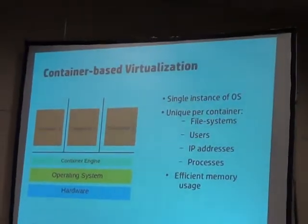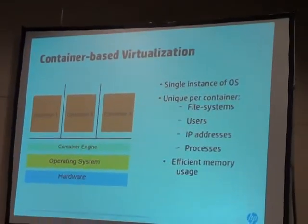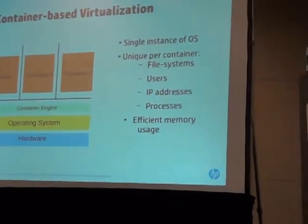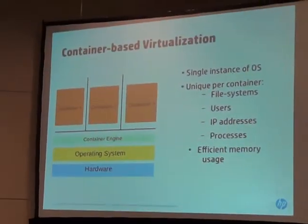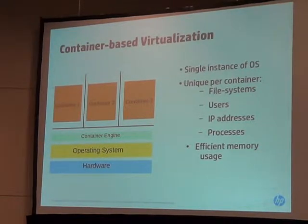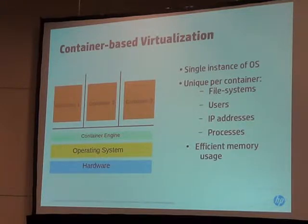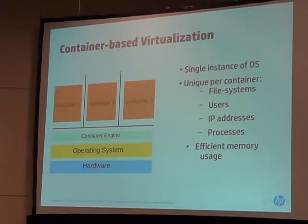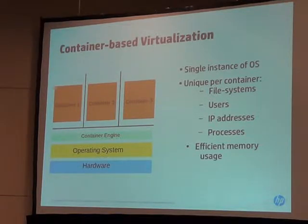To depict pictorially what I just said: here we have the hardware at the bottom, then we have the operating system and a container engine. In some cases the container engine and the operating system could be switched into one, but logically there are two pieces. I've depicted three containers, and notice there's only a single instance of the OS in this configuration. What's unique here is that even though there's a single instance of the OS, the file systems, the user database, the networking, and the process tree are unique for each container.